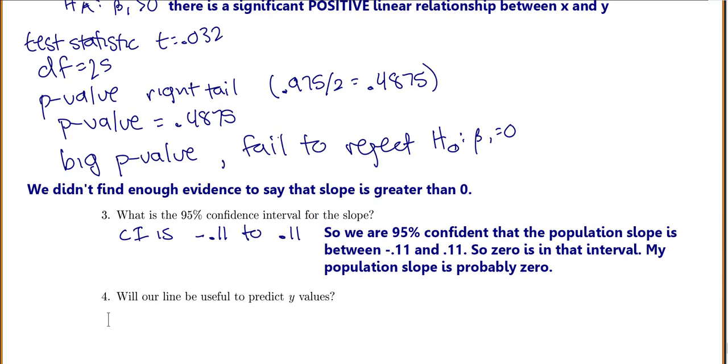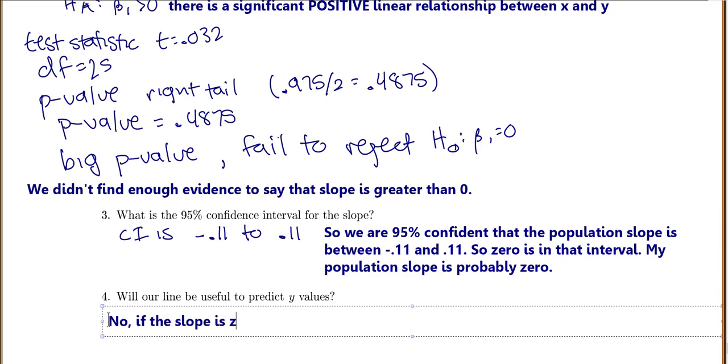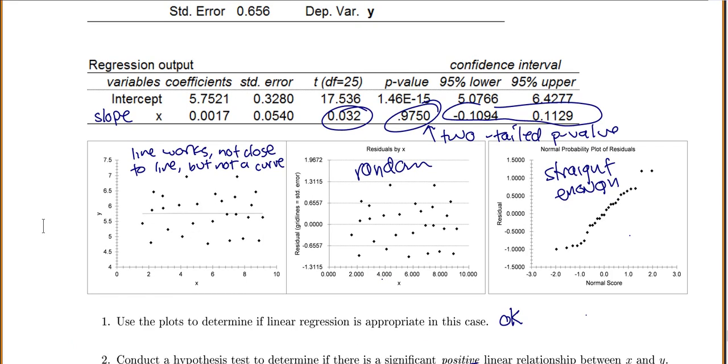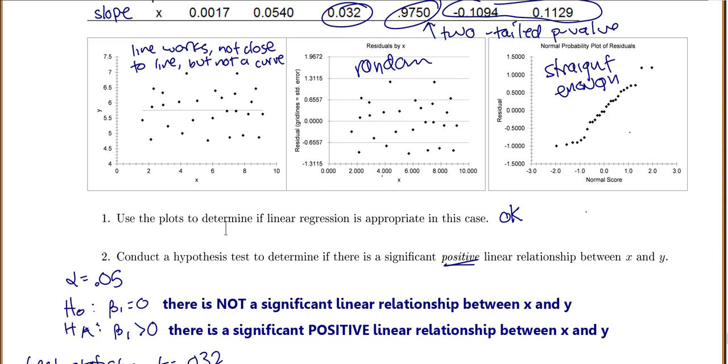And if that's the case, is our line going to be useful to predict y values? No. If the slope is 0, then knowing what x is doesn't tell you anything about y. And that makes sense again because when I looked at this first graph, I looked at it like that looks like it would be a flat line. It doesn't seem like there's any pattern to those points, like they really just seem to be scattered about.